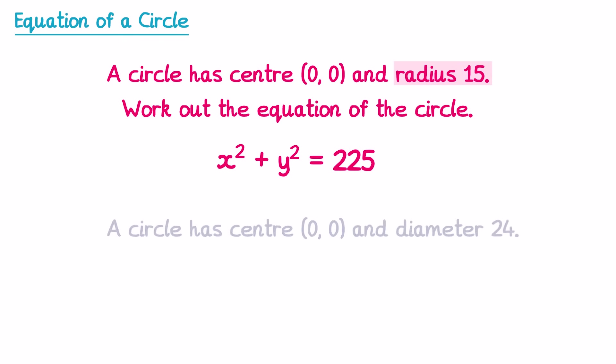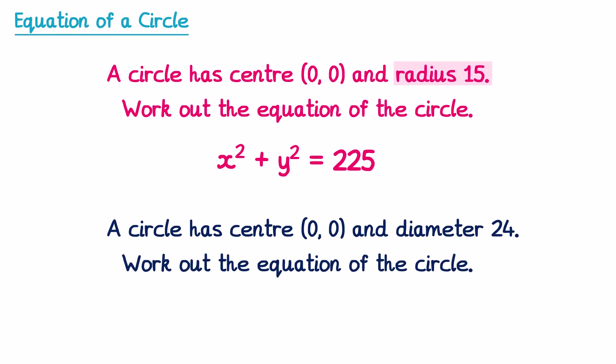This could be slightly more complicated if they give you the diameter instead. In this example, the diameter is 24, and we need to find the equation of the circle. If the diameter is 24, the radius is half of that, which is 12. So the equation is x² + y² = 12² = 144.